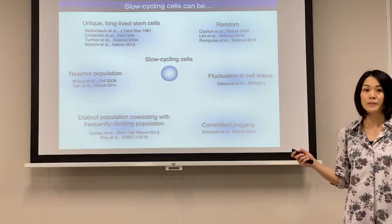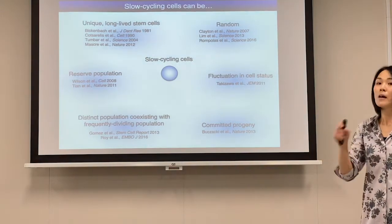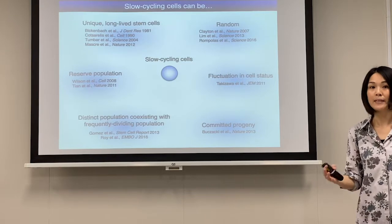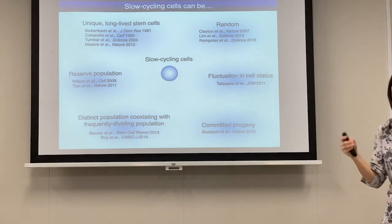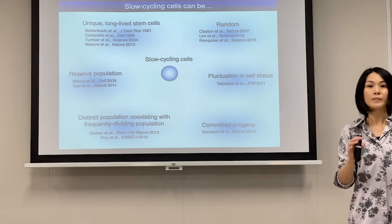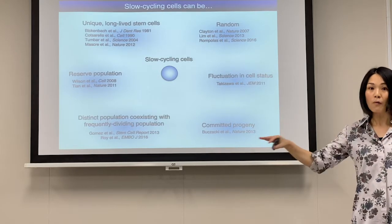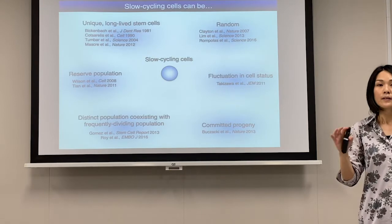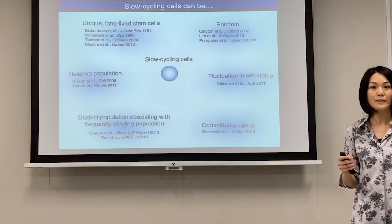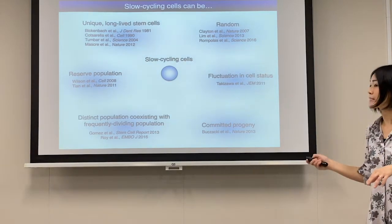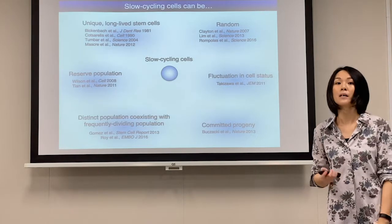But there are several other studies that suggest different roles of slow cycling cells. Slow cycling cells could be a unique long-lived stem cell population, but they could also be a reserve population that does not actively participate in normal tissue homeostasis, but they are activated in response to injury. Or, slow cycling in nature could be a random thing — some cells divide more or divide less, but in terms of cellular property or stem cell potential, they may be equal. It's still a mystery what the property of those slow cycling cells is, why tissue needs them, and what their role is in different contexts.